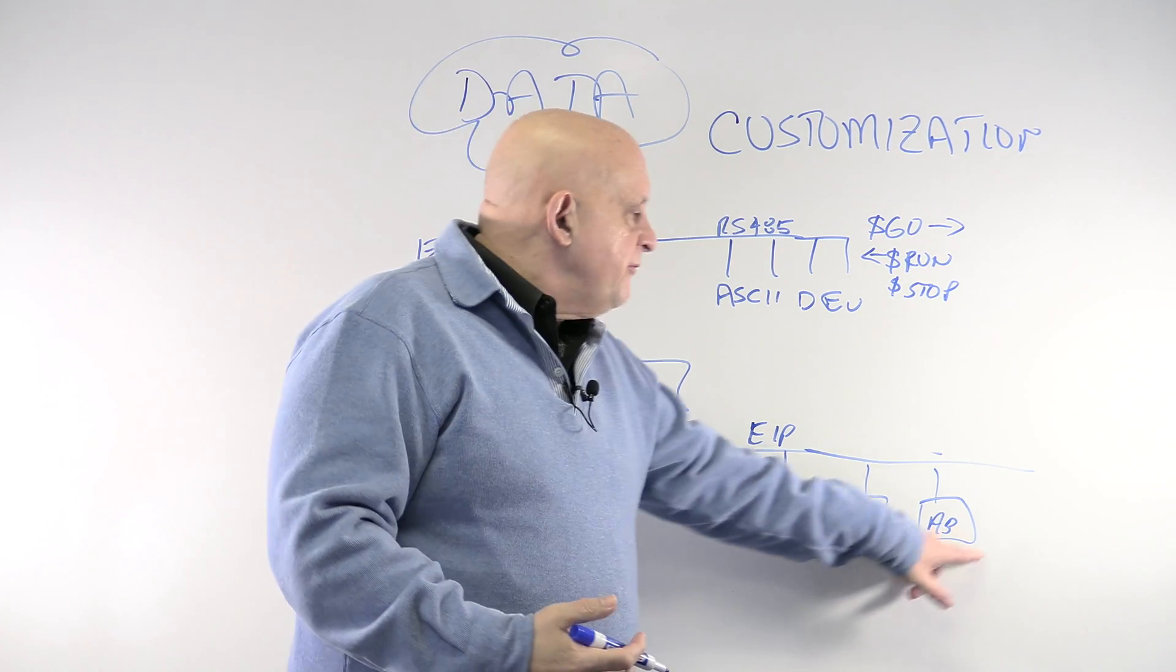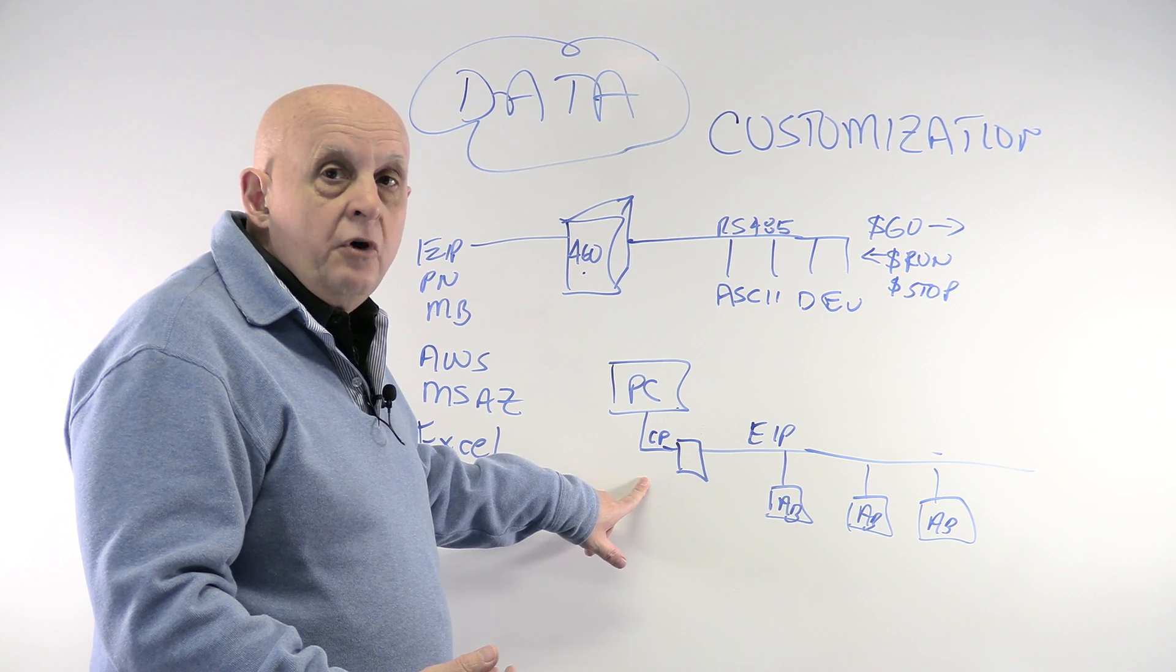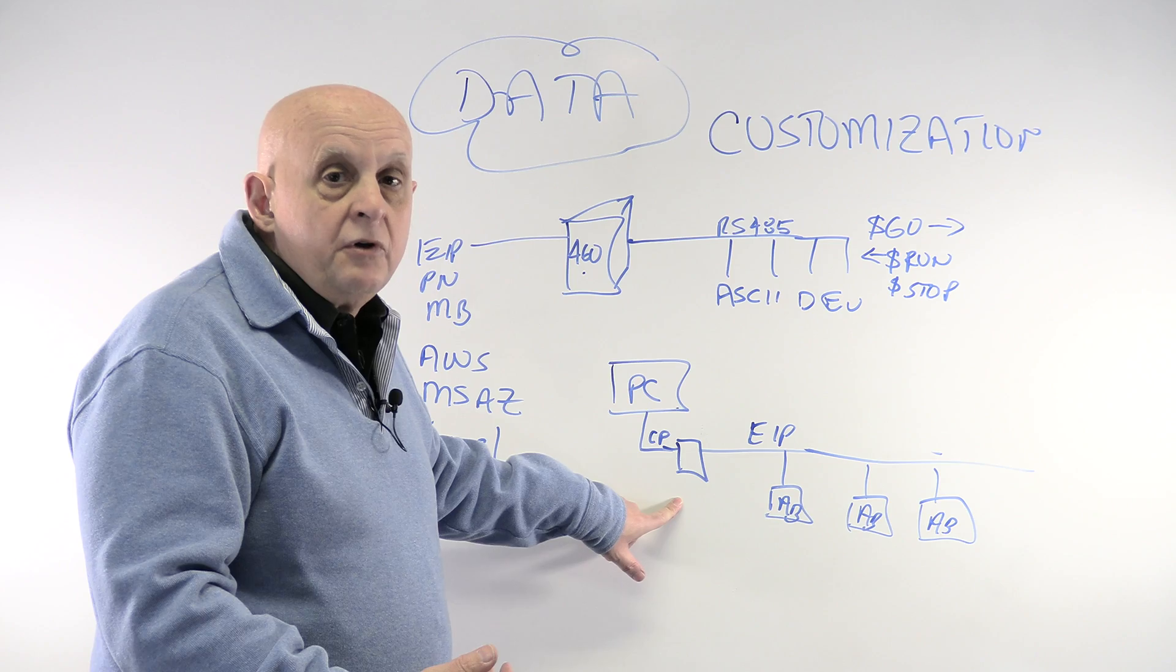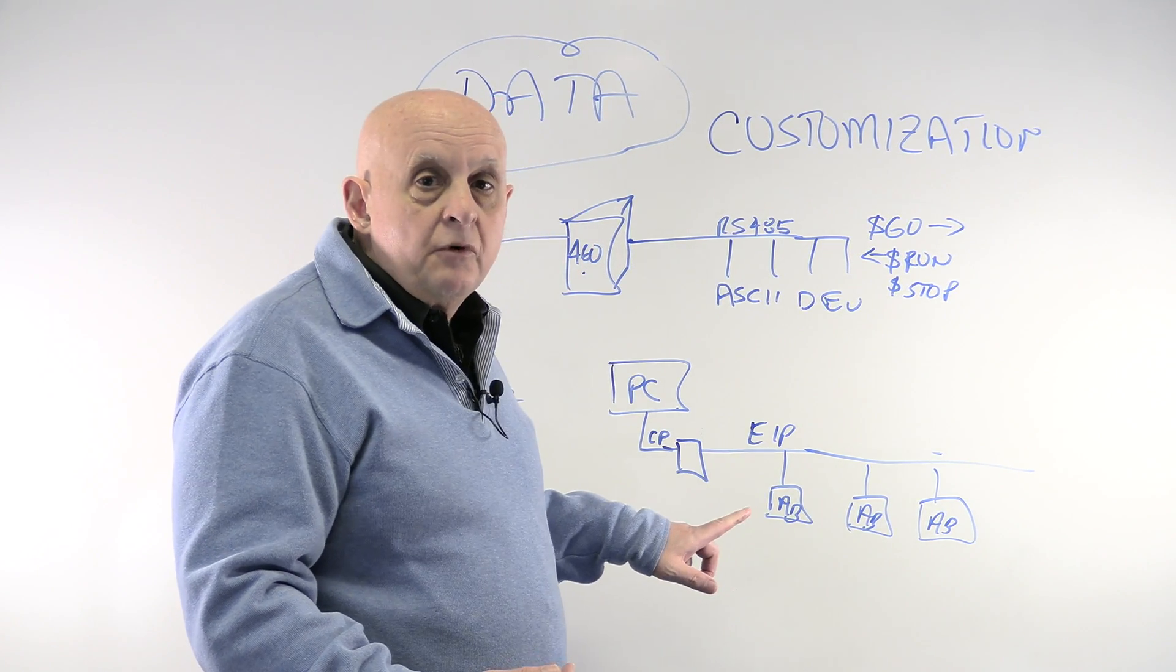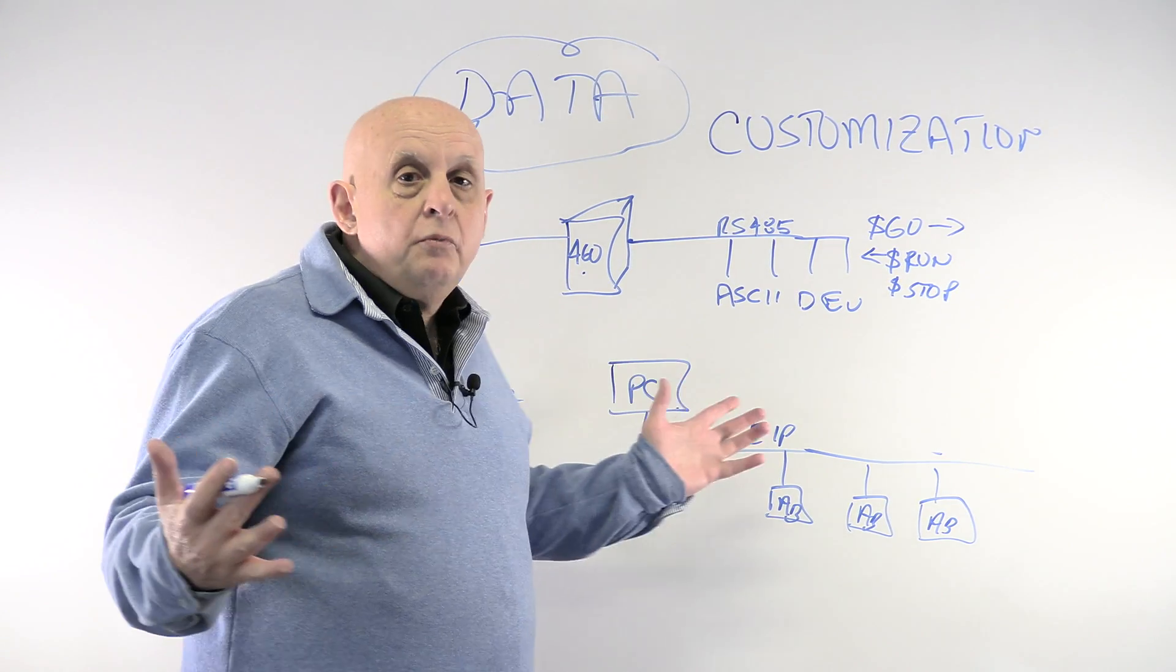For the Bellagio to redo this whole thing, 15 years ago it cost $32 million. To redo their entire control system, they figured it would be $100 million today. But now, because they can just buy these little boxes from us that convert the protocol, boom, they're great.